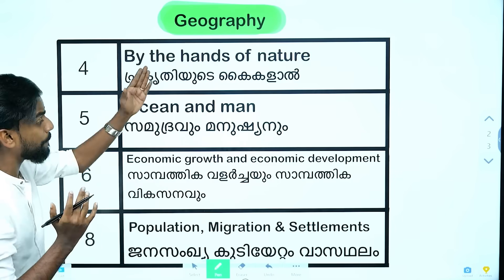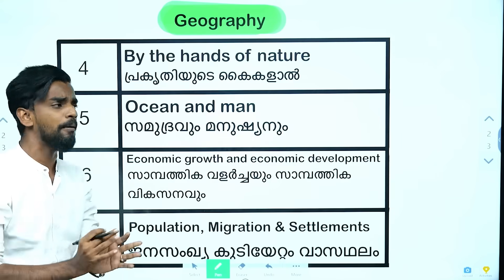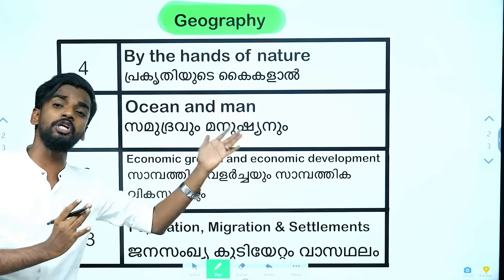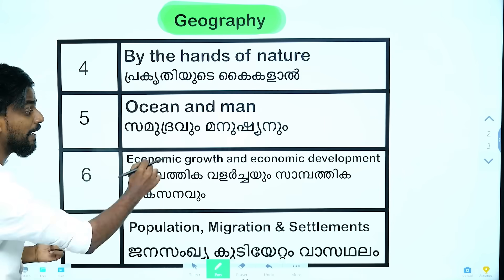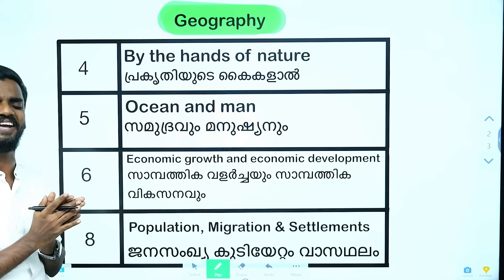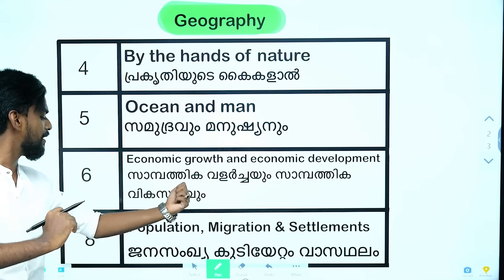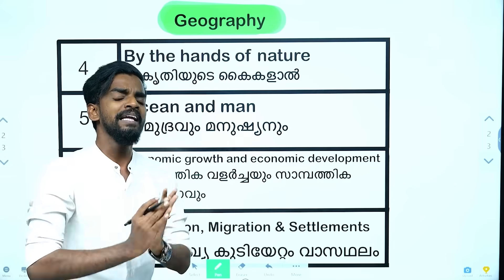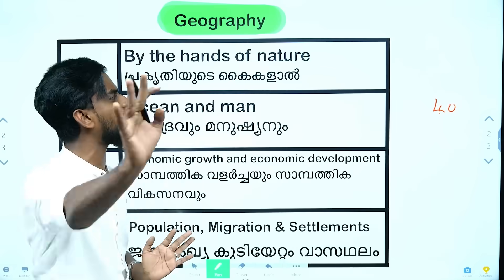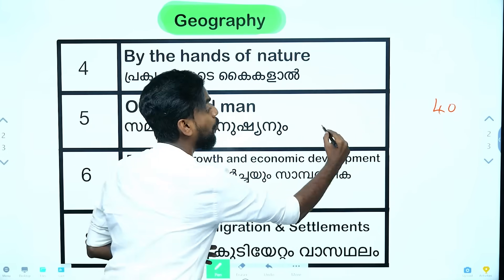We will talk about four chapters in the history and geography for this examination. The geography topics include: ocean and man, economic growth and economic development, population, migration, and settlement.